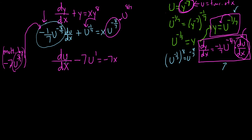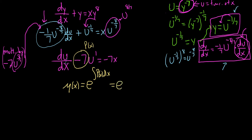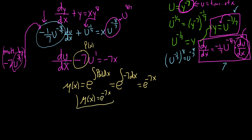Since it's now linear, we find the integrating factor. P(x) is whatever is in front of u, which is −7. The integrating factor μ(x) equals e^(∫P dx) = e^(∫−7 dx) = e^(−7x). Don't worry about the plus c. So the integrating factor is e^(−7x).